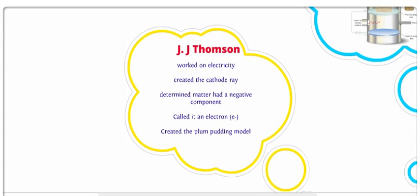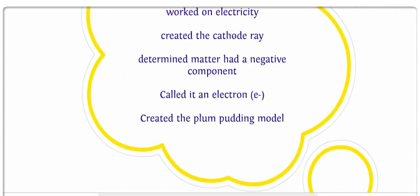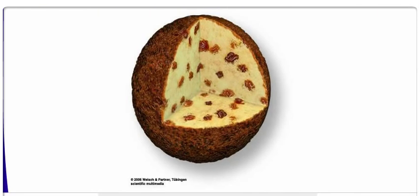And since matter is neutral, when you touch stuff you don't get electrocuted, there must be also some positive part. So he theorized that the atom looked like plum pudding. Now, he was English, and the British call almost every dessert pudding.